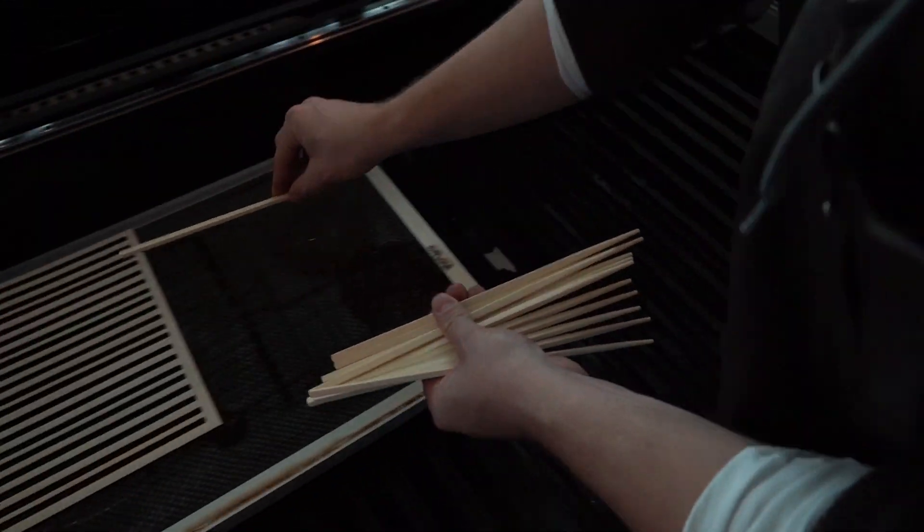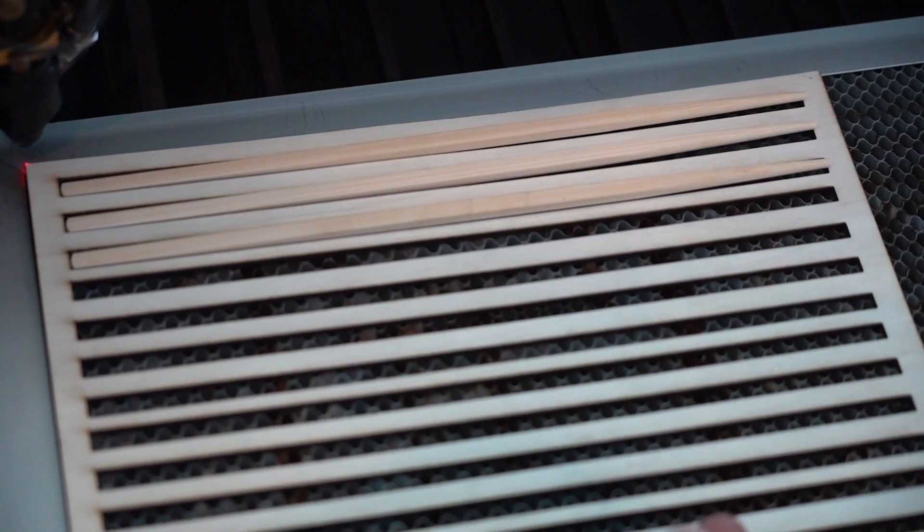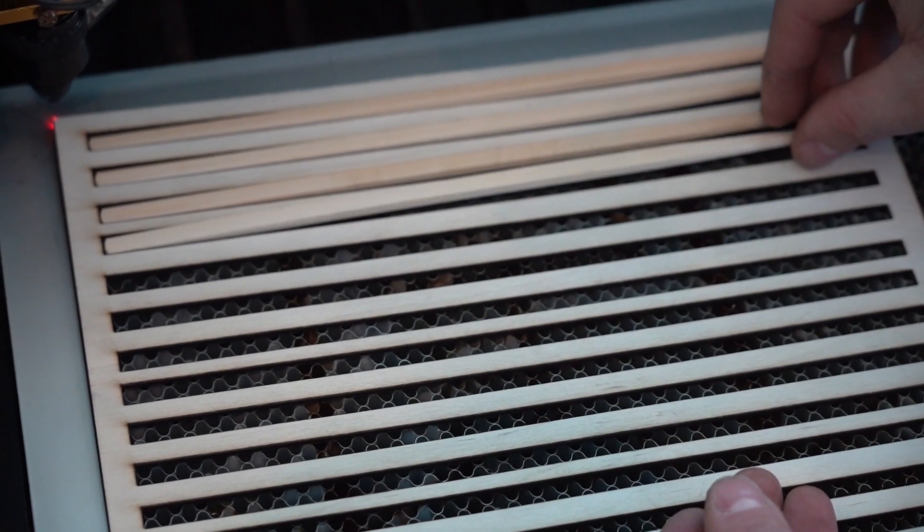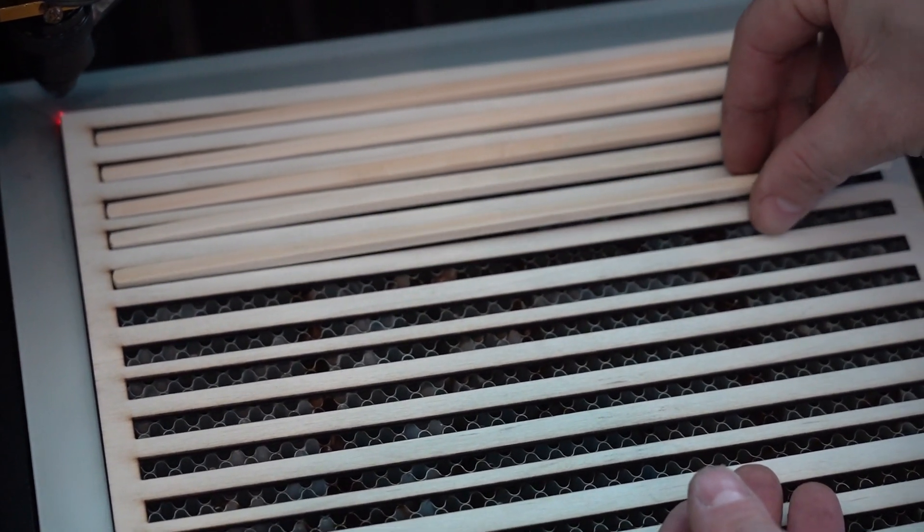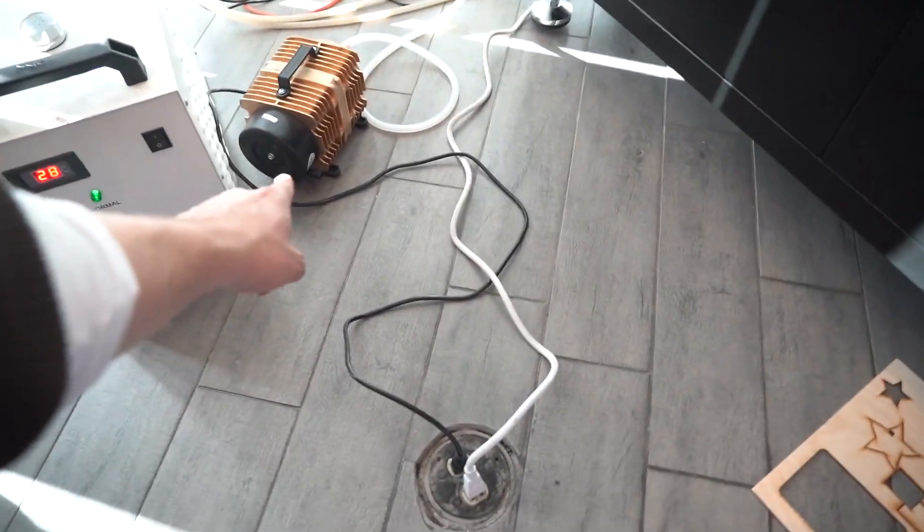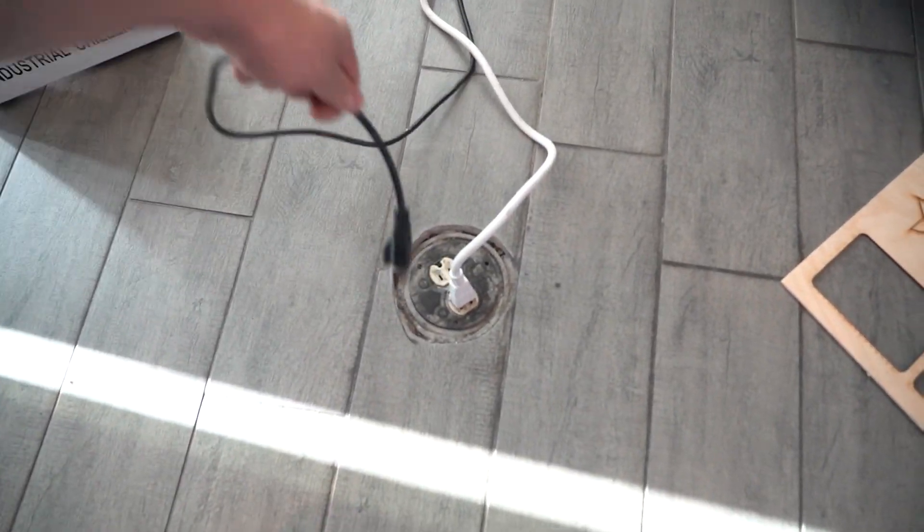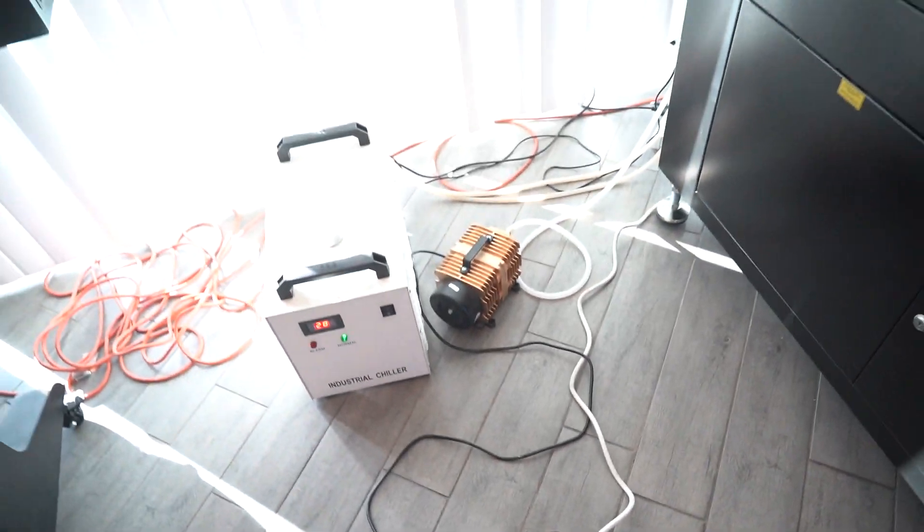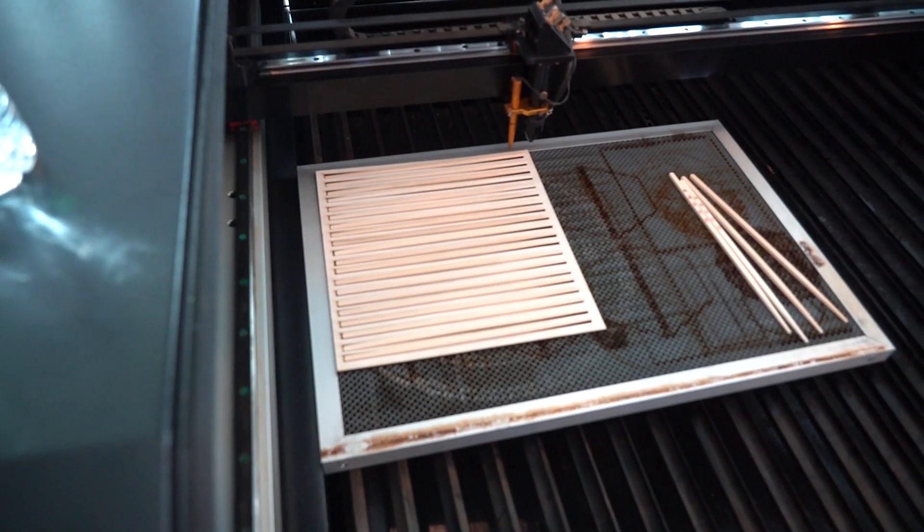Then we're going to put our chopsticks in or whatever it may be. Coasters, anything of that sort that is pre-existing that wasn't exclusively made with the laser that you want to engrave. In this engraving, we are going to unplug the air compressor because we don't want the air blowing around our light, delicate chopsticks.